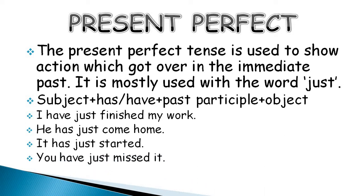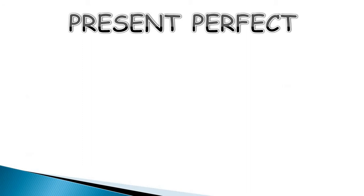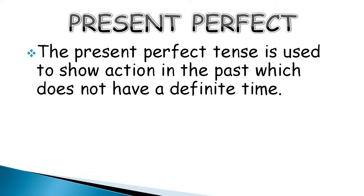The present perfect tense is used to show action in the past which does not have a definite time. I have been to Japan. So I'm not saying a definite time - when did I go to Japan?